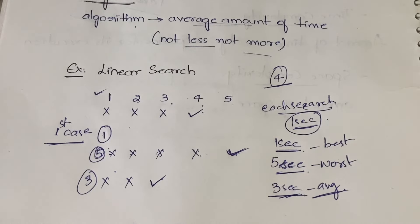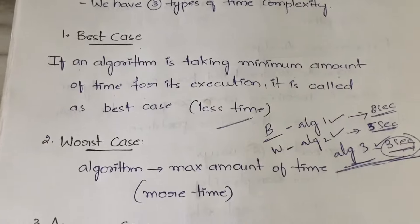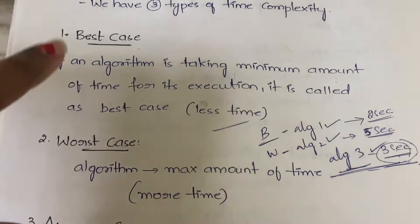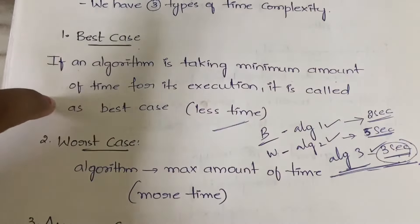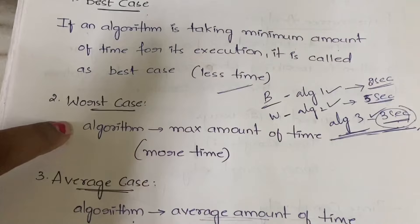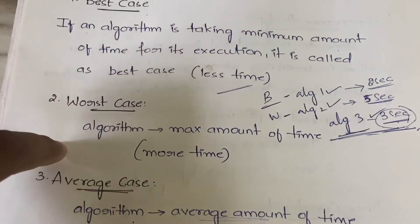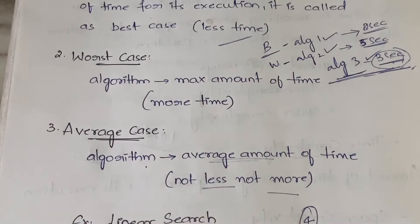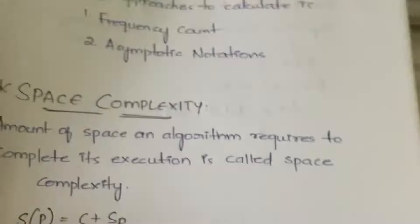So this is about time complexity — very simple. Minimum amount of time is best case, maximum amount of time is worst case, and average amount of time is average case.